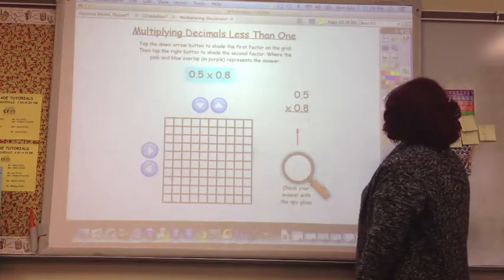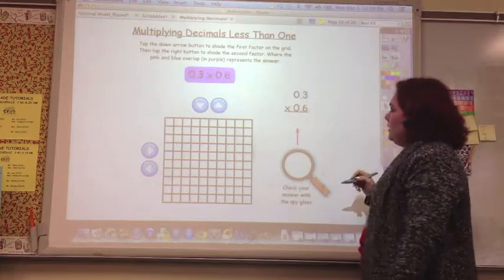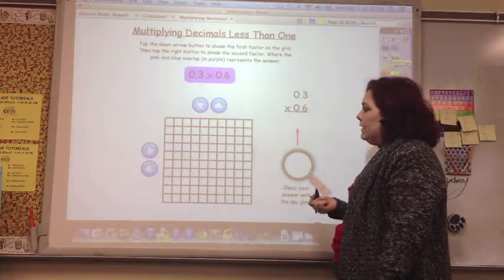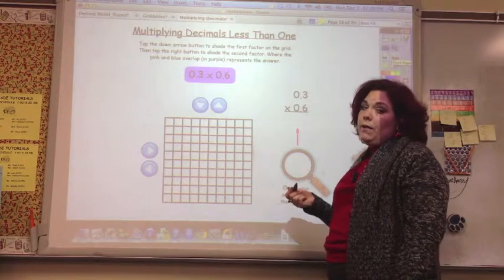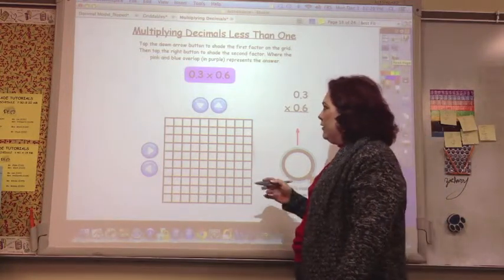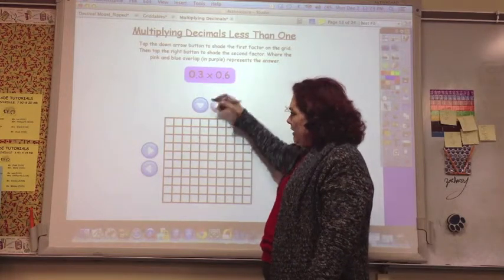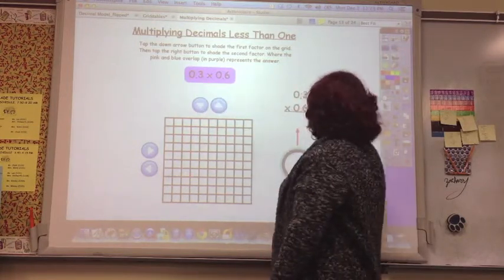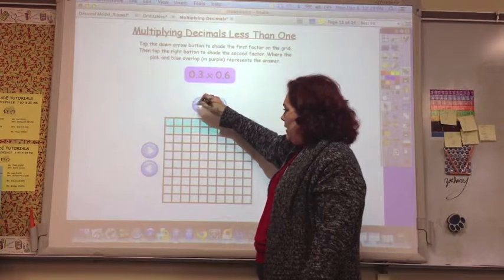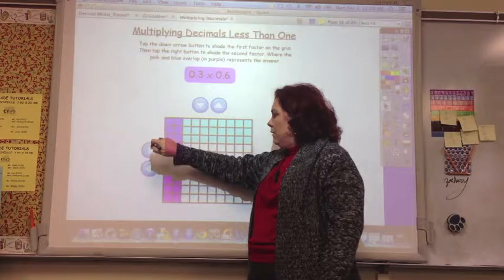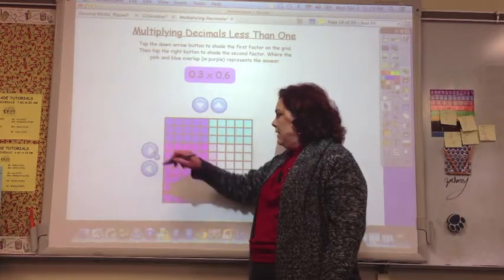Checking it with the spyglass. So now we're going to multiply decimals, again, less than one. So what would this look like? It would look like 3 tenths. We could say going down or going over. It doesn't matter. So 3 tenths. And then 6 tenths, going one, two, three, four, five, six.